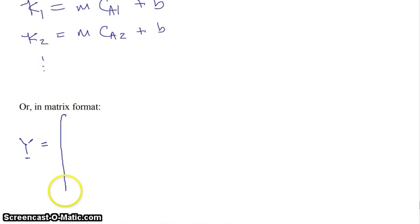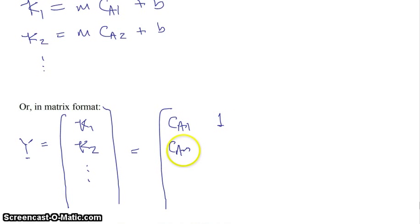So if you remember from class, what this example was is that you had values of our conductivity and values of our concentration of A, of that salt. So you have kappa 1 is equal to m ca1 plus b, kappa 2 is equal to m ca2 plus b, dot dot dot. So in matrix format, we can express this as Y, this capital Y, is equal to kappa 1, kappa 2, dot dot dot, on down, equals to, and in this case, our matrix is now ca1, 1, ca2, 1, dot dot dot, and that follows all the way down to our final data point. And then our A vector is just m and b.